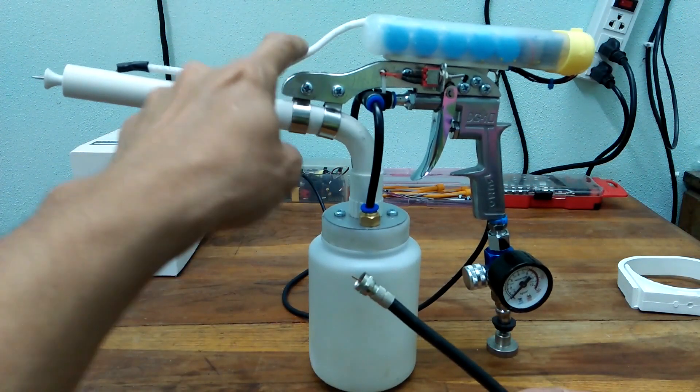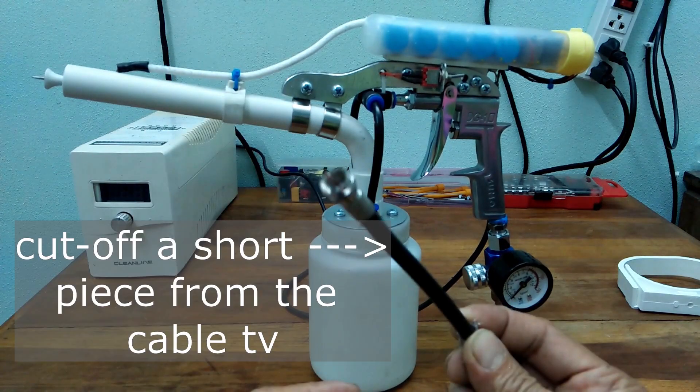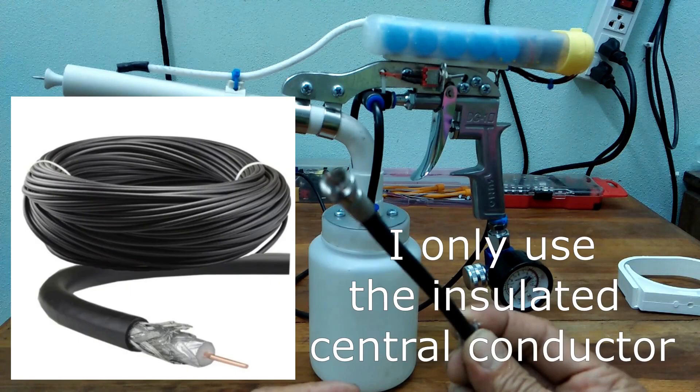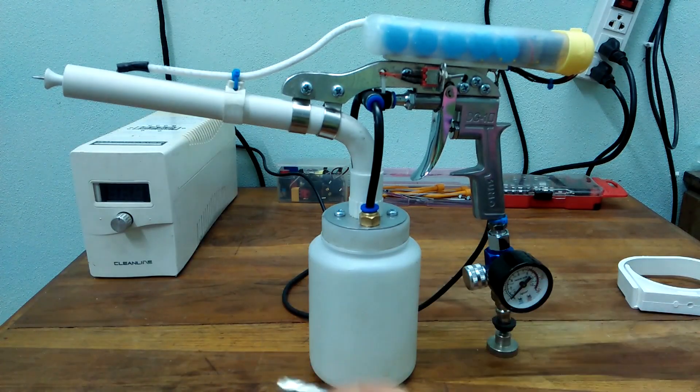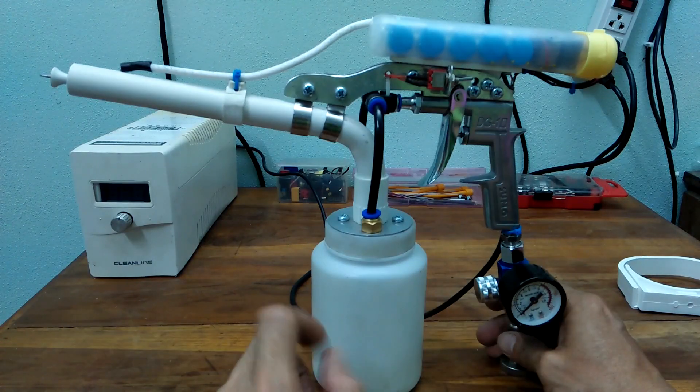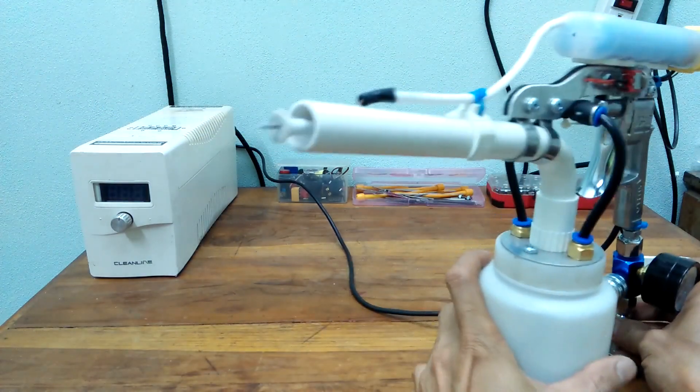I also used this piece of insulated wire for the high voltage output. I got that insulated wire from a cable TV coaxial cable, and I used it because it has very good insulation. That will connect the high voltage output to the electrode at the tip of the gun that will negatively charge the powder through corona discharge.